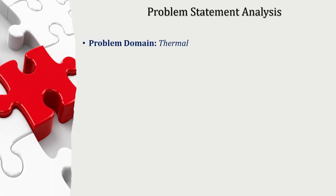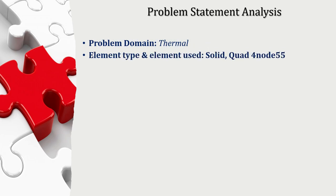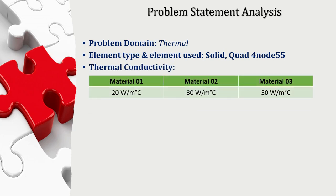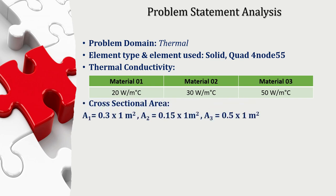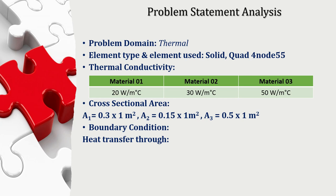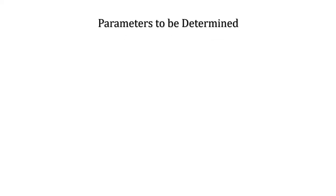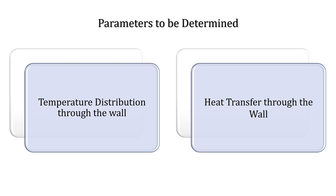Coming to the problem statement analysis: the problem domain is thermal, and we are going to use a solid quad 4-node 55 element to create the model. These are the thermal conductivities of the three different components of the composite wall. The boundary condition is that heat transfer takes place through convection as well as conduction, with the outer temperature at 20 degrees Celsius and the bulk temperature at 800 degrees Celsius. The parameters to be determined are the temperature distribution through the wall at the salient points and the overall heat transfer through the wall.